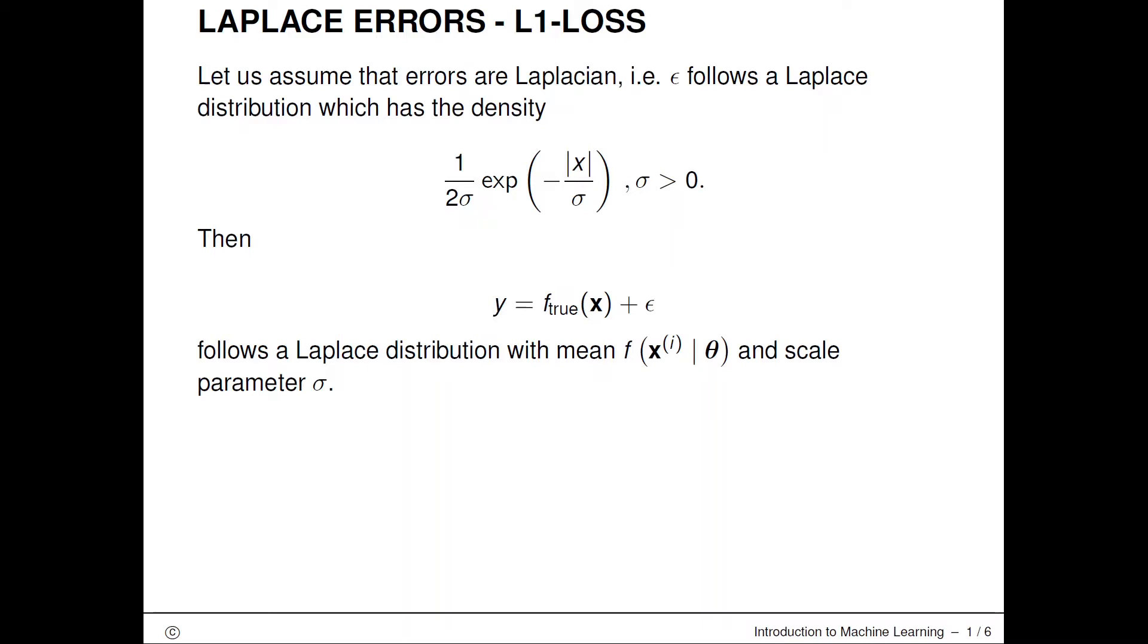I'll now consider the case of Laplacian errors, where the error distribution has this density which basically looks like a Gaussian distribution but we don't have these squared terms in the exponential. Instead we have the absolute value of x in the exponential term.